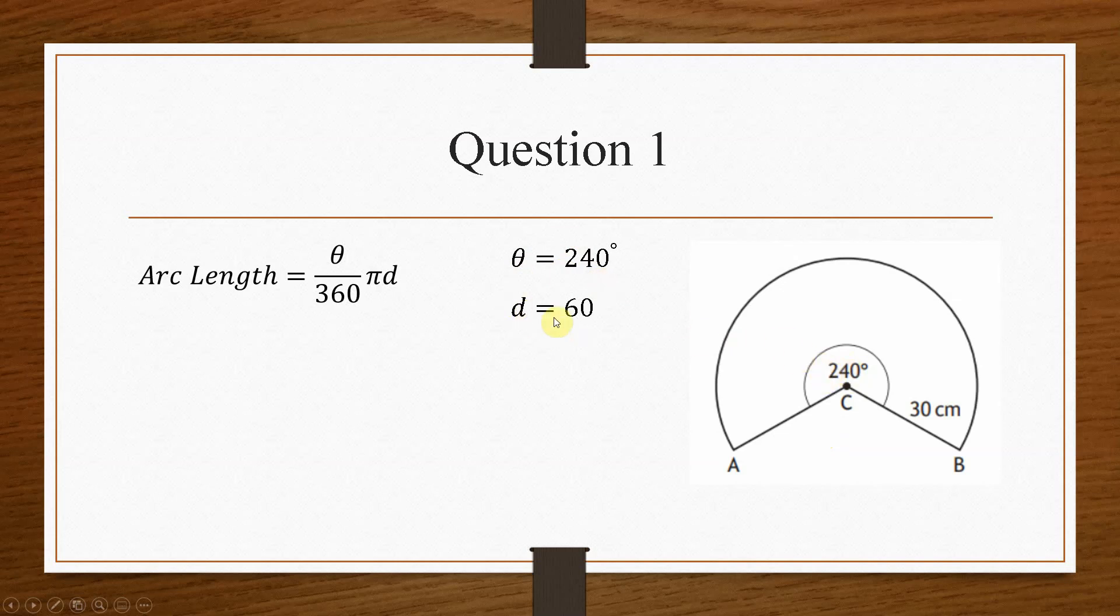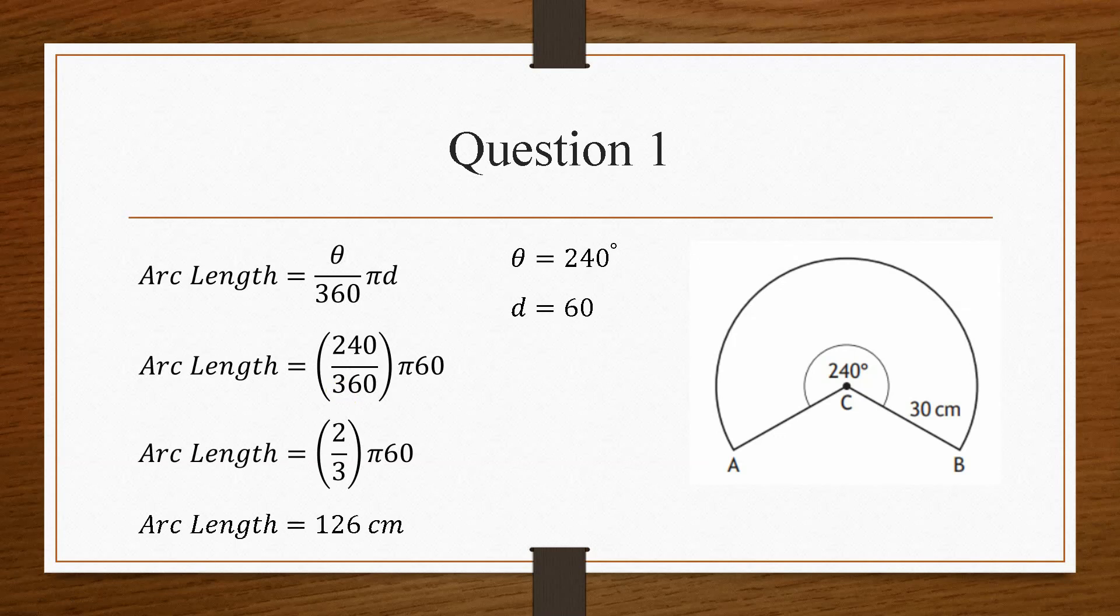and the diameter is 60, because we're told that the radius from the centre to the outside is 30 centimetres. So the diameter would be 60. Once we know this, all we have to do is pop these numbers into this equation, and then simplify. So the 240 over 360 becomes 2 over 3 pi 60, and then if you put that into the calculator, your arc length here is 126 centimetres.